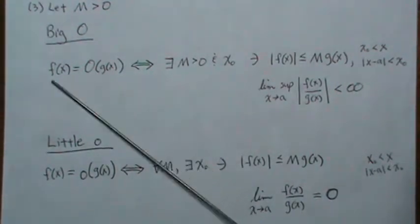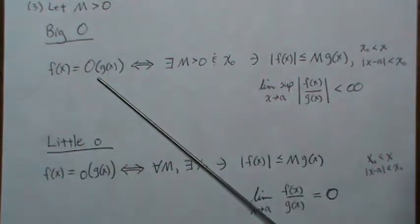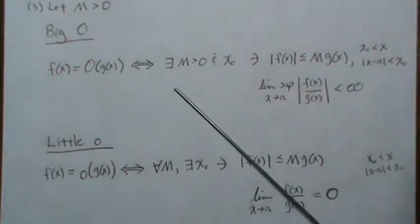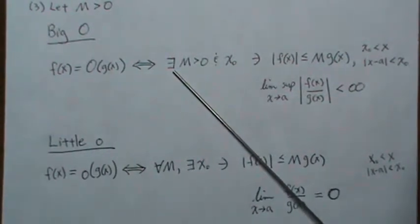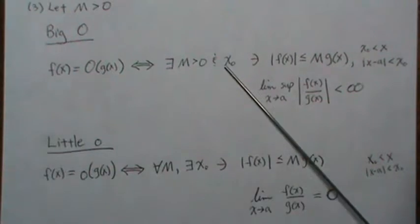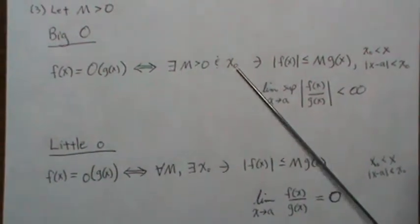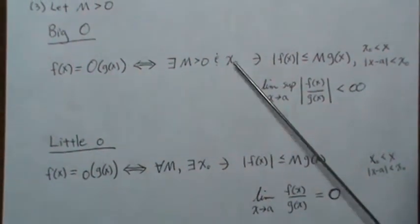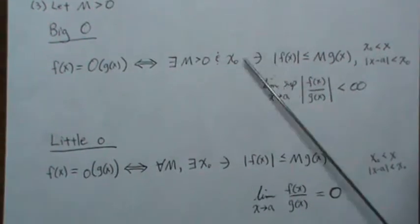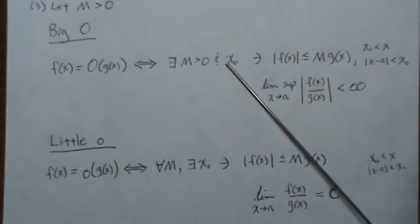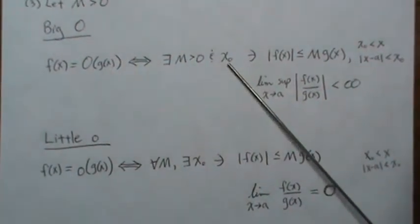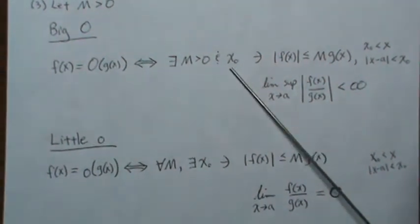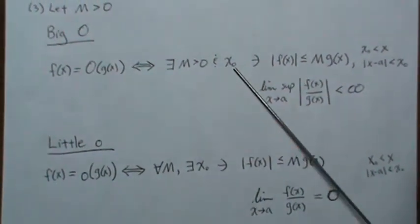Because they behave similarly in the big O case, the ratio — you divide them — it goes to some value that's not infinity. Now the big O symbol means: there exists a positive m and some value x₀, where x₀ means x has to get much bigger than that, or x has to be in a neighborhood of size less than x₀.